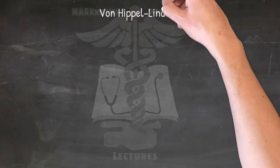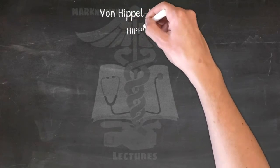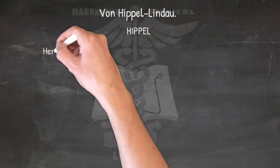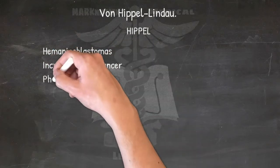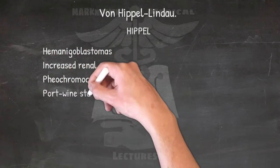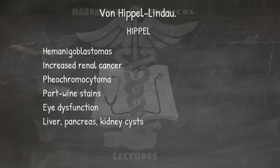Von Hippel-Lindau disease: an inherited disorder characterized by the abnormal growth of both benign and cancerous tumors and cysts in many parts of the body. Its signs and symptoms are remembered using HIPPEL — Hemangioblastomas, Increased renal cancer, Pheochromocytoma, Port wine stains, Eye dysfunction, and Liver/pancreas/kidney cysts.